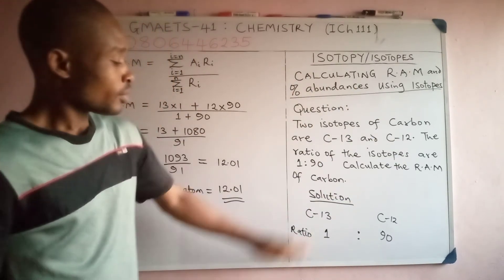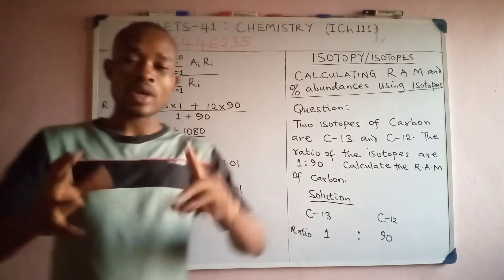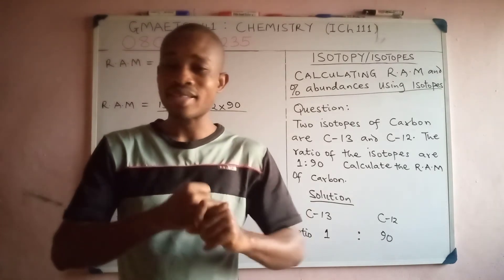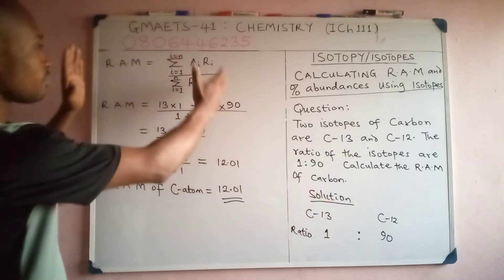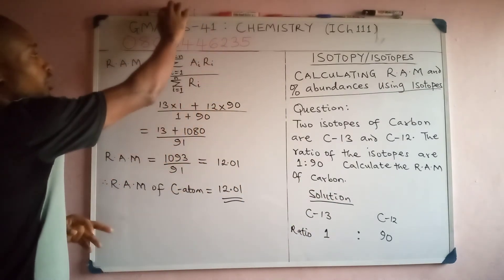Now that we have this, you can see that from the question what was given to us is mass number and ratio. It means we are going to rely on this formula to calculate our RAM.